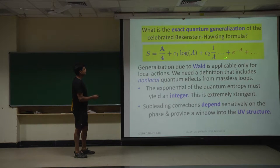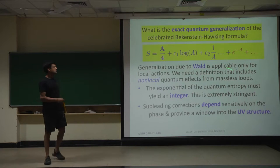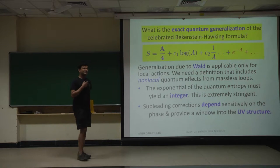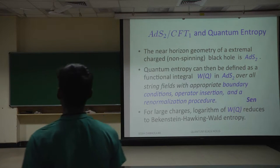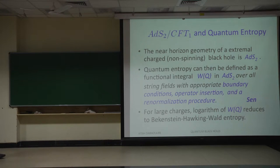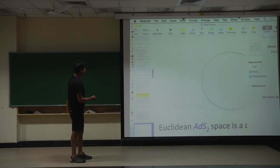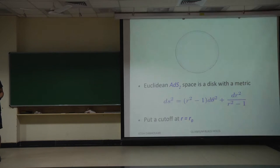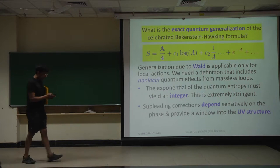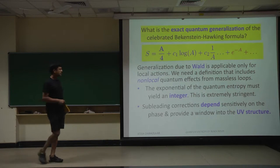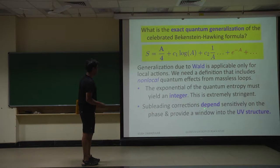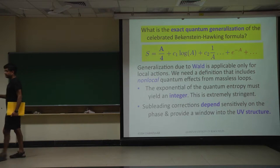If you change the coefficient of the R-squared term in the effective action of string theory, C2 will change. If you were dealing with some non-renormalizable theory, you could put whatever value of C2 you want. But if you demand that the result has to be an integer, then you are not at liberty to adjust these coefficients. String theory gives you very precise coefficients — that is the power of string theory. Because of that, the subleading corrections depend sensitively on which compactification you are using, and that's why we get a window into the ultraviolet structure of the theory.